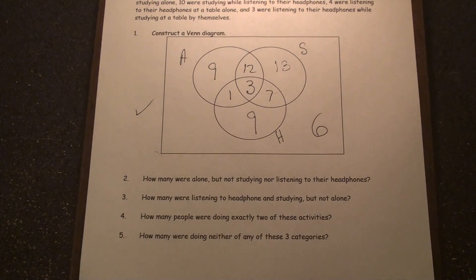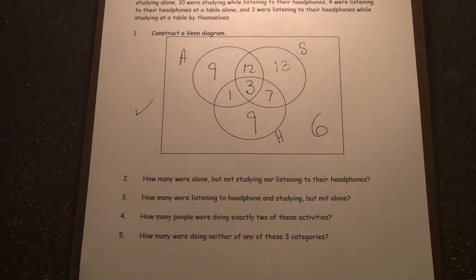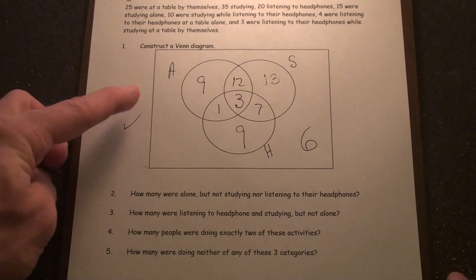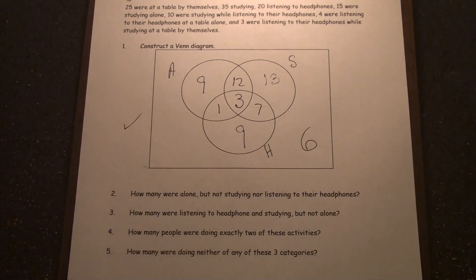So now that we've constructed the Venn Diagram using the three categories, we can answer some questions. Question number one was to construct the Venn Diagram. We just did that.